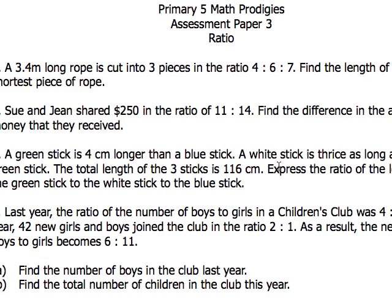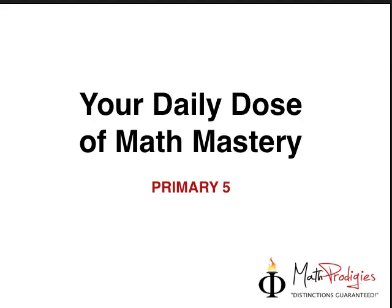The question says: Sue and Jean shared $250 in the ratio 11 to 14. Find the difference in the amount of money they received. Let's imagine this - Sue and Jean shared $250 in the ratio of 11 to 14. I'm going to draw this out for you.